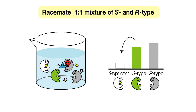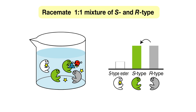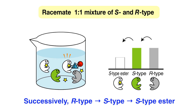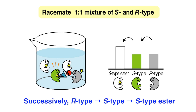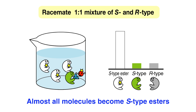Next, the action of the coupling agent causes conversion of R-type to S-type. As the catalyst continues to couple S-type with the alcohol, the quantity of S-type continues to fall. Eventually, this reaction leaves only S-type ester. Finally, the resulting ester is transformed into the corresponding S-type NSAID.